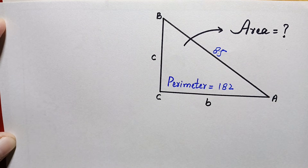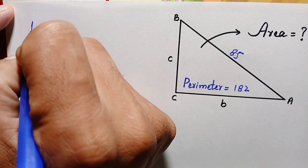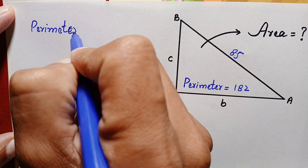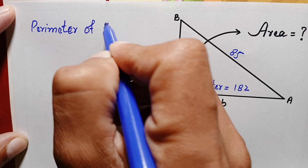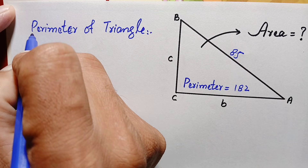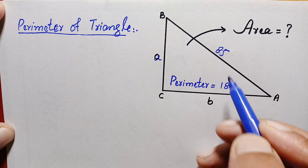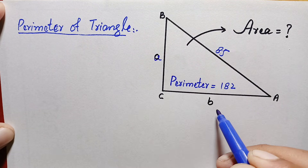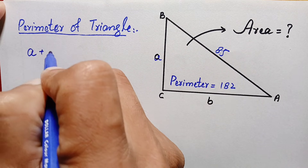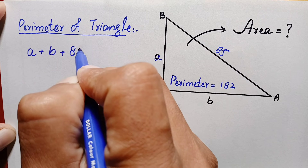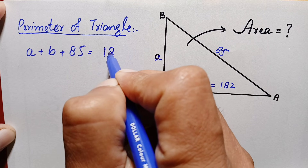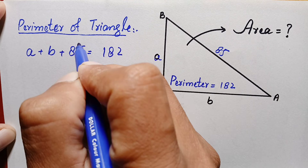So the perimeter of this triangle is the sum of its three sides. We can write: perimeter of triangle = a + b + 85, and this equals 182.